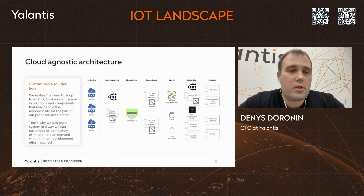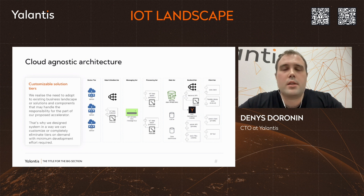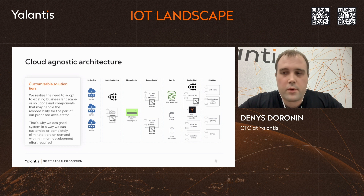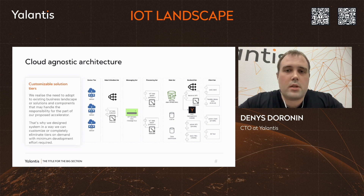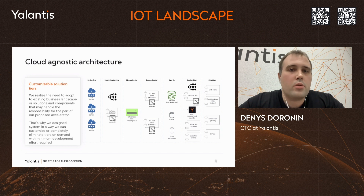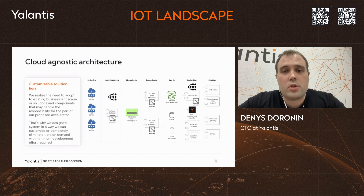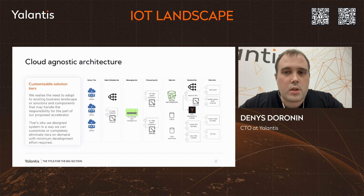Our architecture was designed as a cloud-agnostic approach from the very beginning. We don't limit ourselves to the constraints of existing services — our thought process was to first define components and their responsibilities, and only after that select services that will perform those roles. For the data collection tier, we need balancers to capture events from edge devices and a data collector module. For the messaging tier, we want a message bus to route data from edge devices to the processing tier.